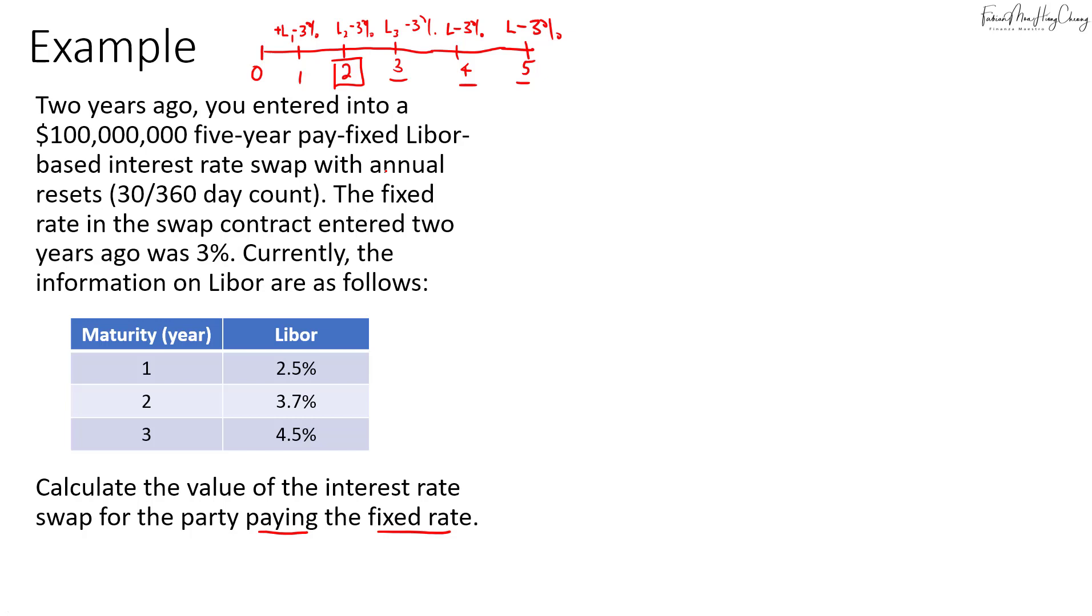So in this case you will have to assume that we are going to close the contract. So when you close the contract you'll have to enter into an offsetting position. So to offset it we have to go against what we did in the first place.